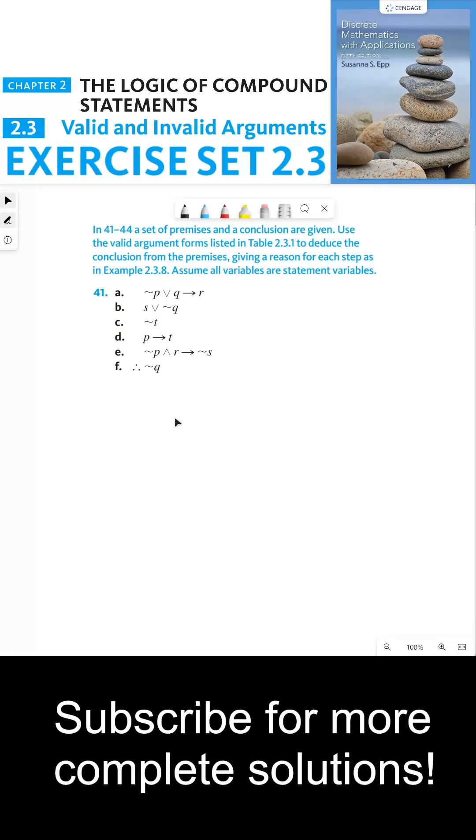41 through 44, a set of premises and a conclusion are given. Use the valid argument forms listed in table 2.3.1 to deduce the conclusion from the premises, giving a reason for each step as in example 2.3.8. Assume all variables are statement variables.